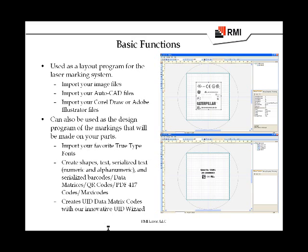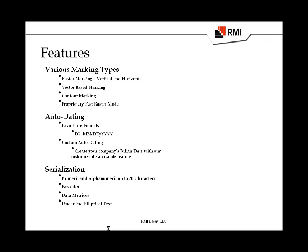User layouts are pretty easy. You can import files — CAD/CAM files, Adobe, CorelDRAW. It works from any TrueType font on your system, and there's a very in-depth barcode and matrix maker. It runs variable text as well — rasters, vectors, and does contouring. It does raster and vector because we're working on a GALVO head, which is an extremely fast unit, with auto-dating and serial numbers.